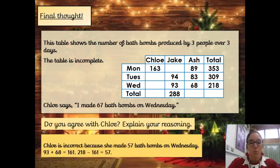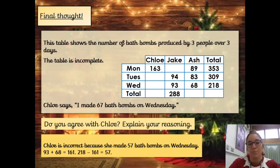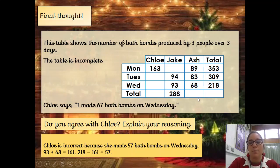Hopefully you worked out that Chloe is incorrect, because she made 57 bath bombs on Wednesday — she just miscalculated. If we add 93 and 68 together, it's 161. Take 161 away from 218, and it equals 57.